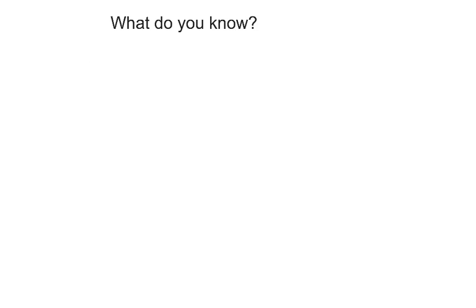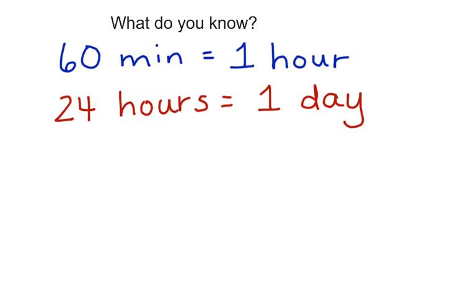The first question to ask yourself is, what do you know? What do you know about units of time? First, we can start with minutes. We know that there are 60 minutes in one hour. Next, we know that there's 24 hours in one day. September is a month, and we know that there are 30 days in September.